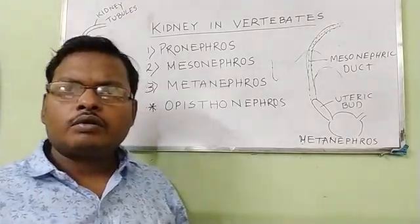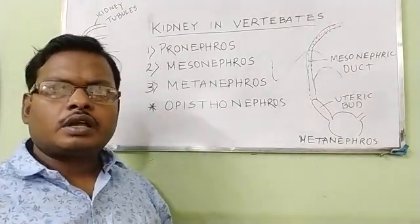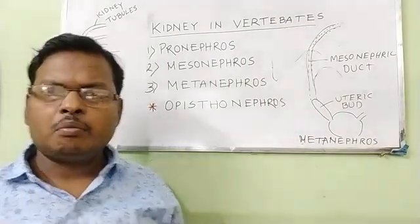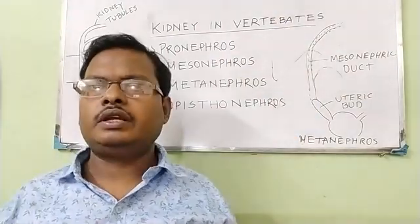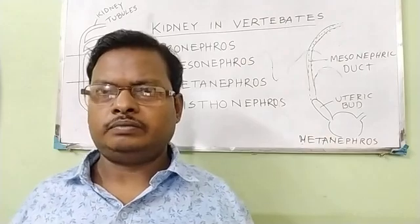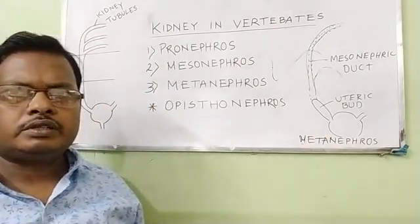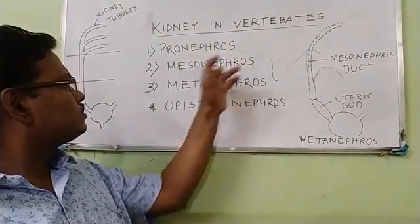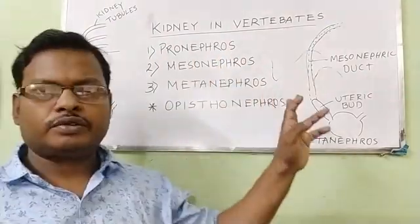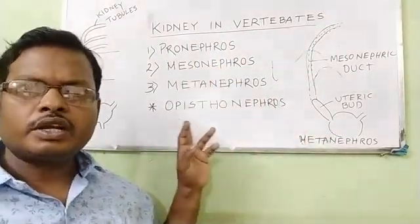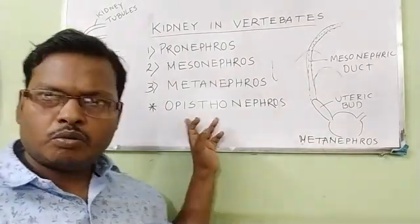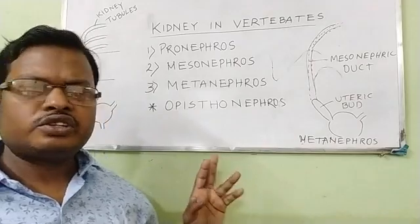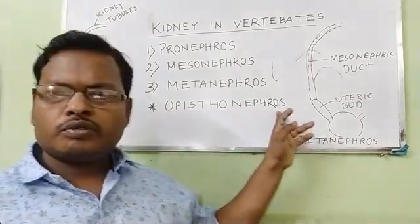We will now discuss kidneys in vertebrates. Vertebrates develop the kidney as the main excretory organ. Three types of kidneys are found: Pronephros, Mesonephros, and Metanephros. A specialized type of Mesonephros is found in some animals — long-bodied animals — called Opisthonephros.